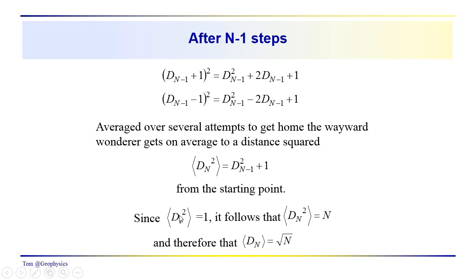Since d sub 1 squared equals 1, it follows that d sub N squared - we just keep adding 1 each time - so the average of d sub N squared equals N. That gives us the average distance traveled is the square root of N.